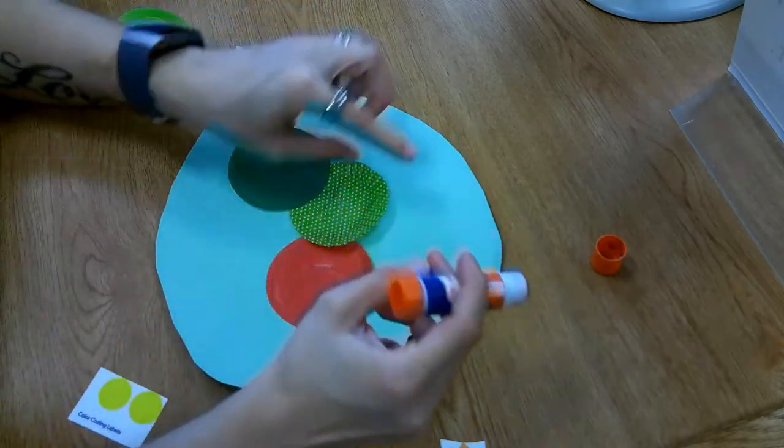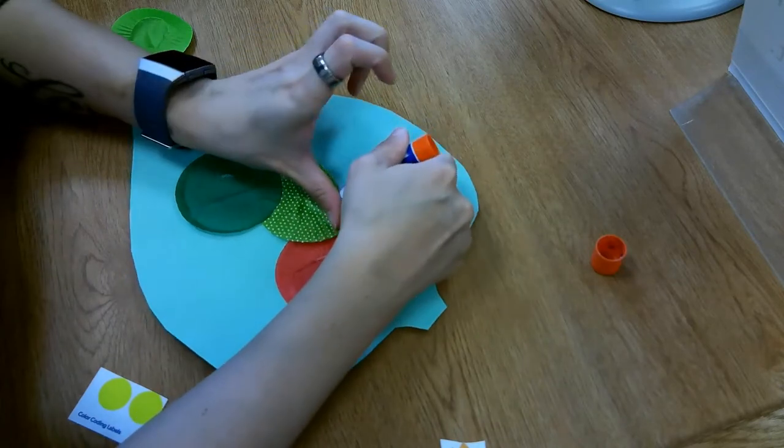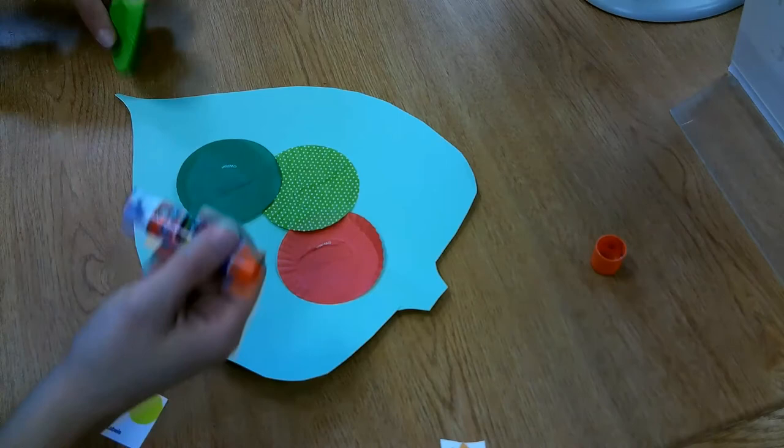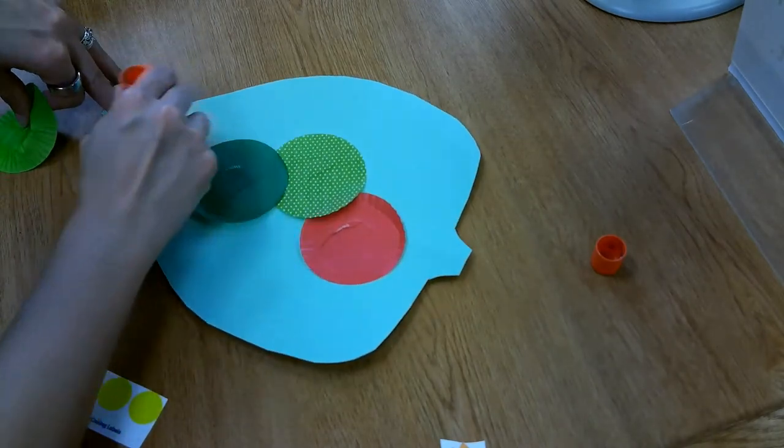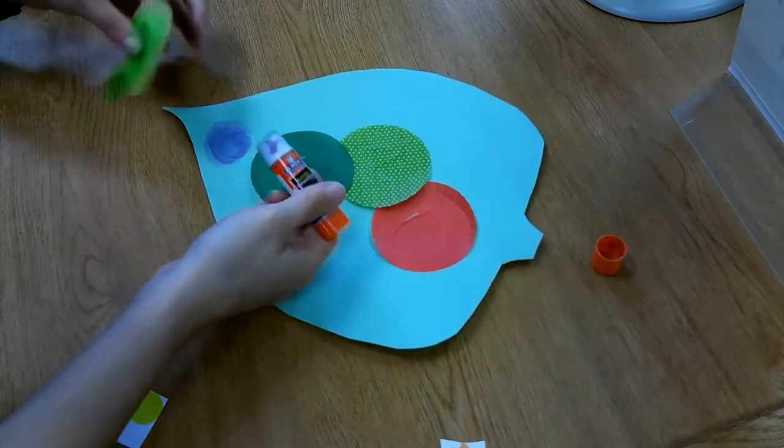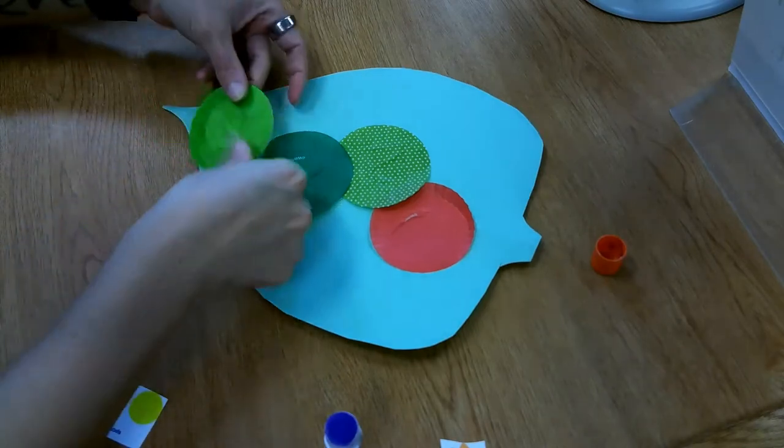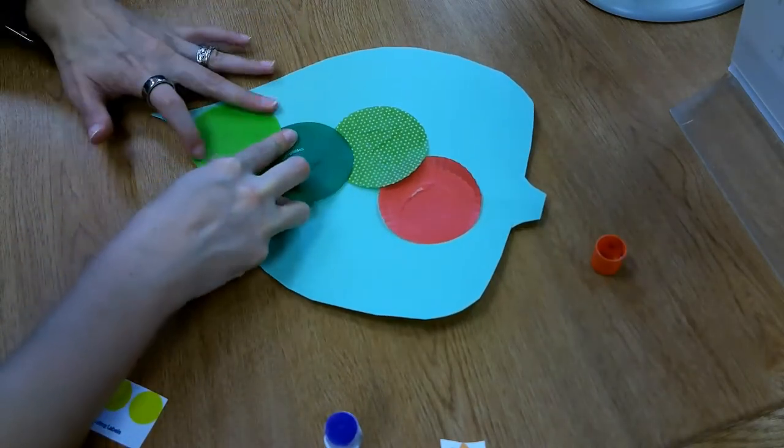And if your cupcake liner starts to pop up a little bit, you can always just add a little bit more glue around the edges. Here's his little tail, the caboose of our caterpillar. Pop that right here. Brilliant!